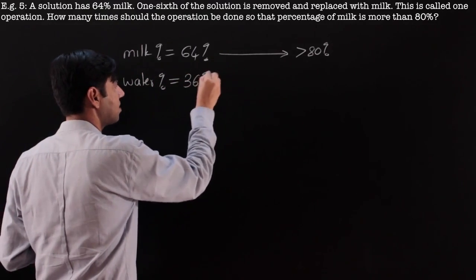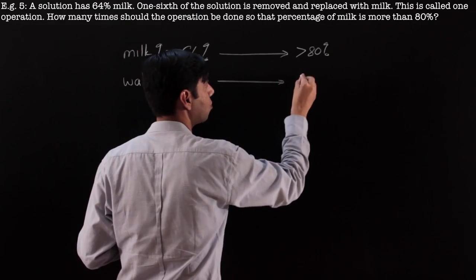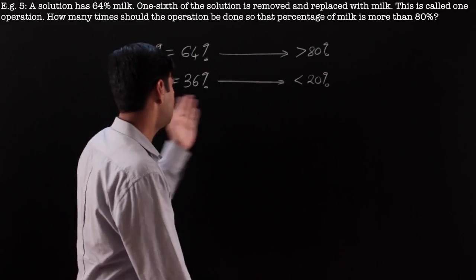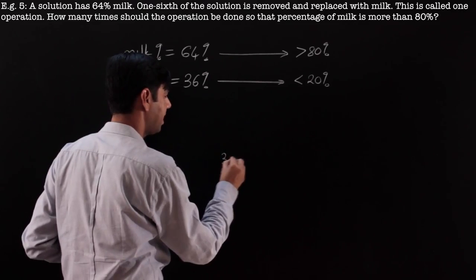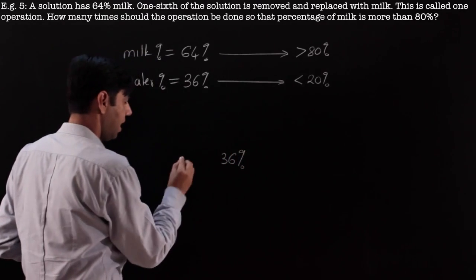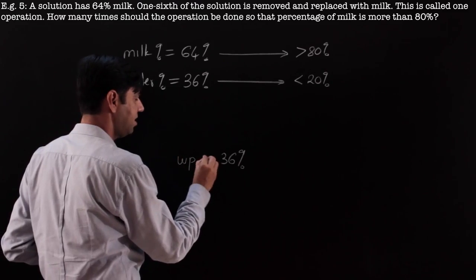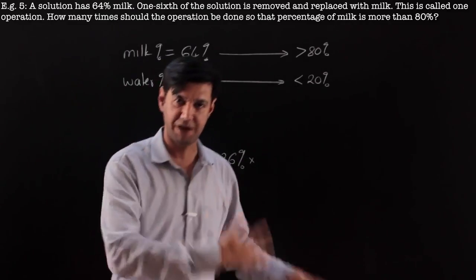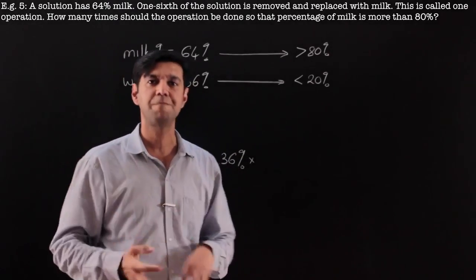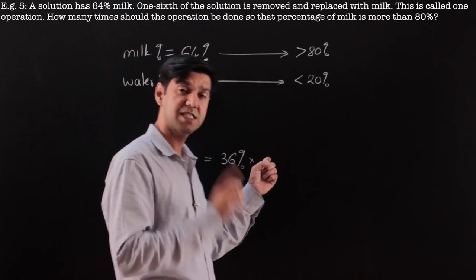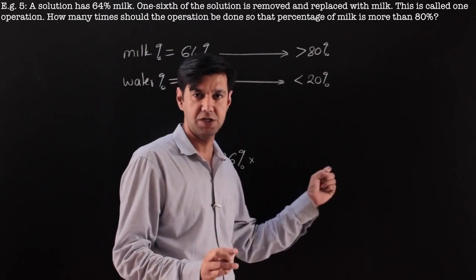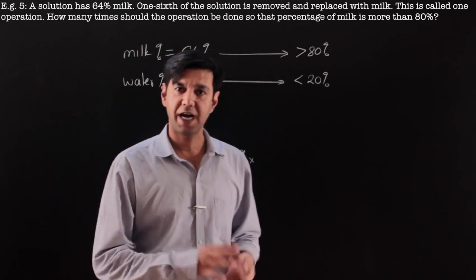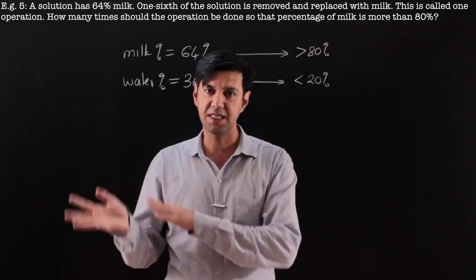So I'll change to water percentage. Initially water percentage was 36%, and finally if milk is more than 80% then water has to be less than 20%. I'll work on water. Water is going out when one-sixth of the solution is removed; when milk is added, water doesn't come in. So the factors have to be less than 1. One sixth is removed, so starting volume 6 becomes 5, then equal quantity is added so 5 becomes 6.